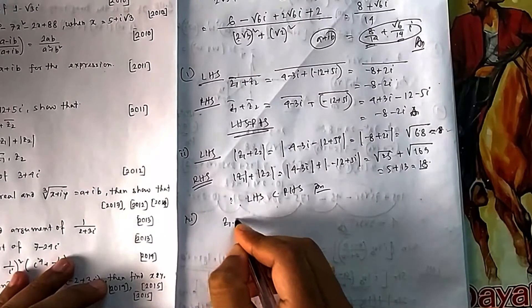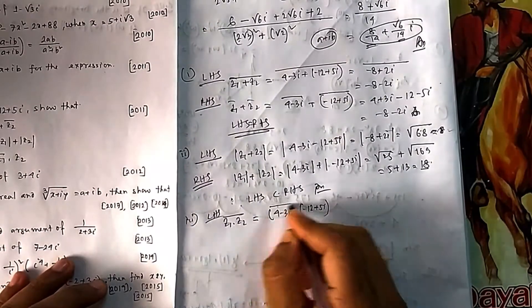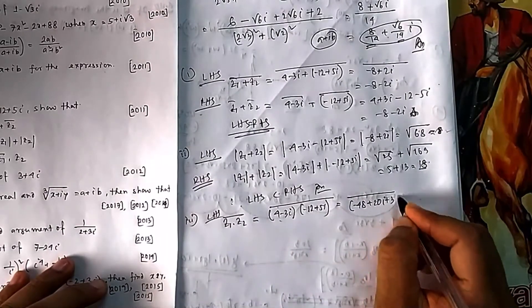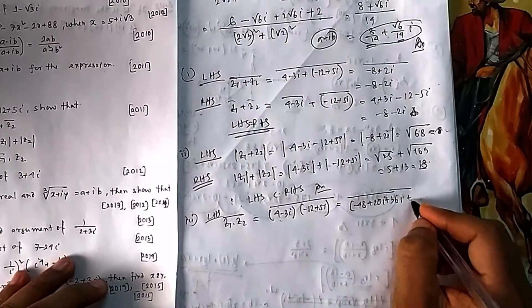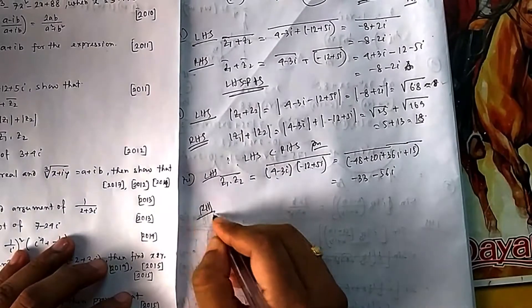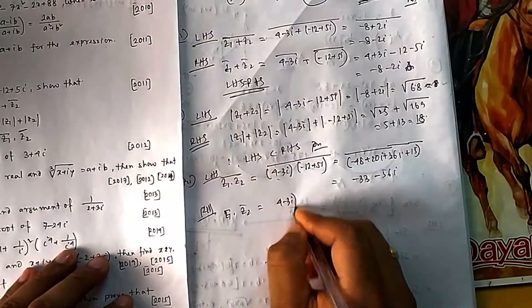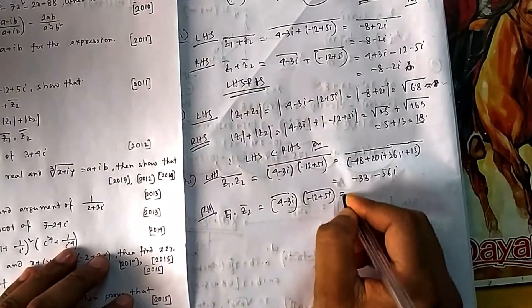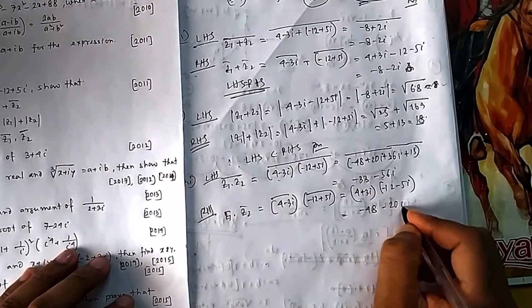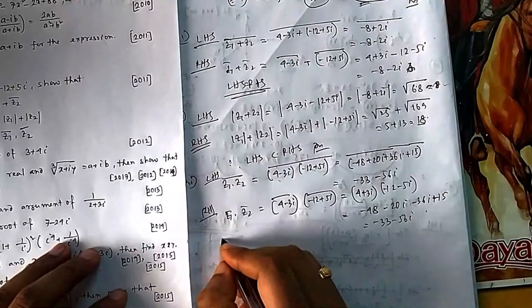For the third property, show that the conjugate of (z₁·z₂) equals z̄₁·z̄₂. LHS: compute 4−3i multiplied by −12+5i = −48+20i+36i−15i² = −48+56i+15 = −33+56i, then take the conjugate: −33−56i. RHS: (4+3i)(−12−5i) = −48−20i−36i−15i² = −33−56i. LHS equals RHS, so proved.